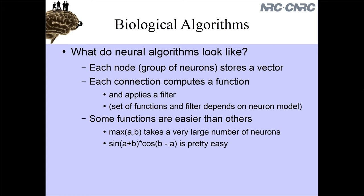The types of functions that are easy to compute - that neurons can do well - are sort of surprising. Just because a function is easy for us to write, like finding the maximum of two numbers, that might turn out to be really hard for neurons to approximate, whereas something really complicated like sin(A+B)×cos(B-A) might actually be really simple. What it comes down to is what sorts of functions neurons are good at approximating - for a lot of neurons, the answer is smooth functions. Functions where small differences in input do not cause large changes in output - another way of phrasing that is functions well approximated by low-degree polynomials.